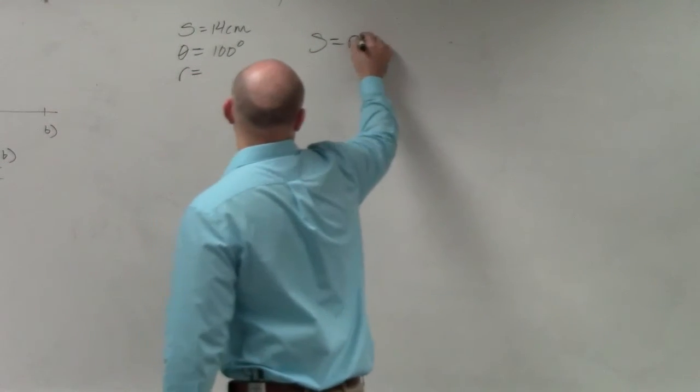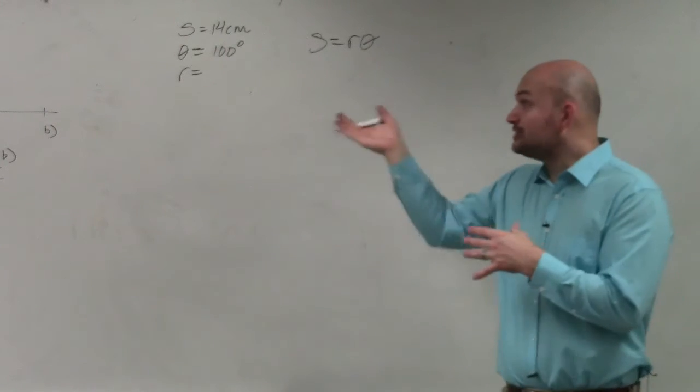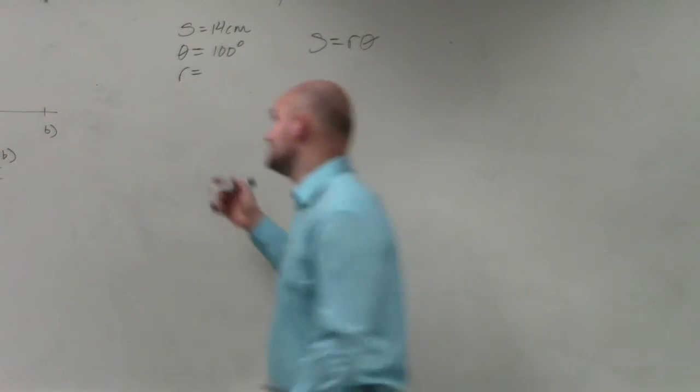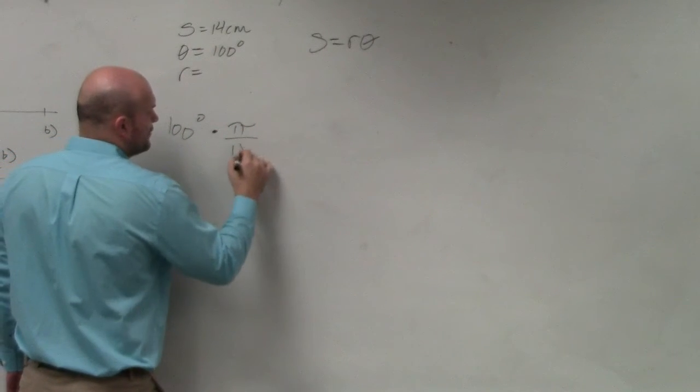So I have my formula, s equals r times theta. I need to make sure I convert my angle in degrees into radians. And we did this on our last quiz. So you take 100 degrees times pi over 180.